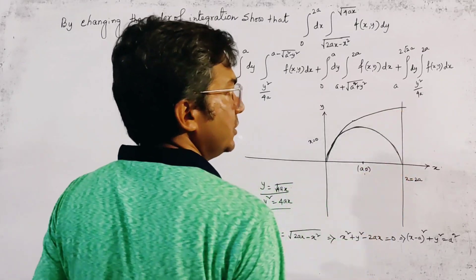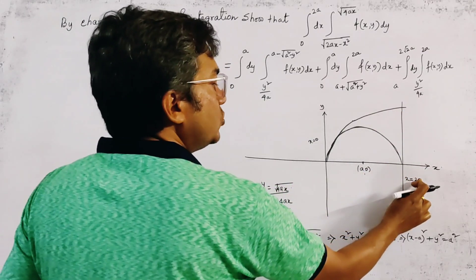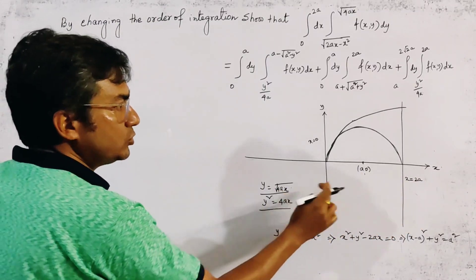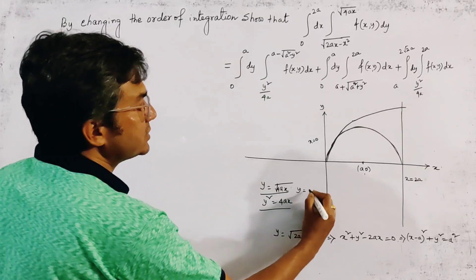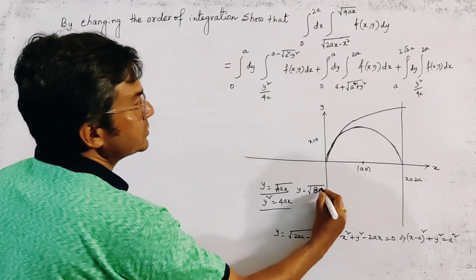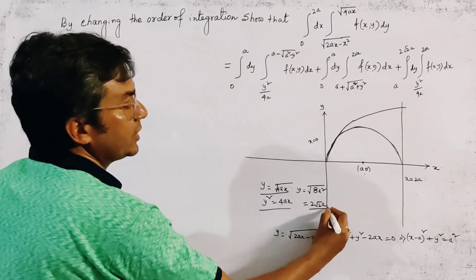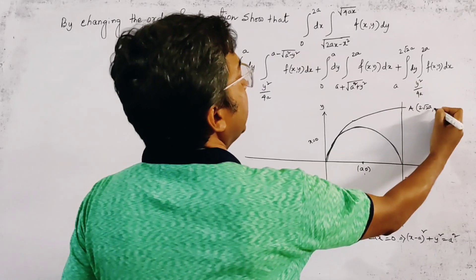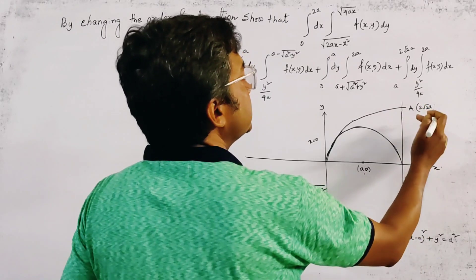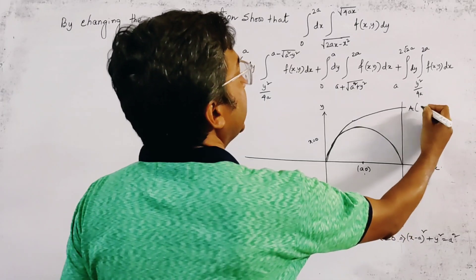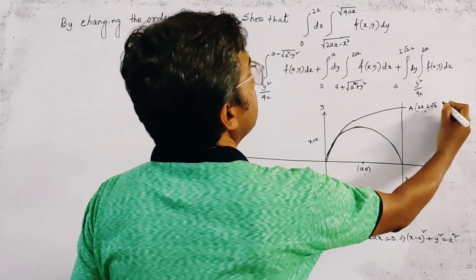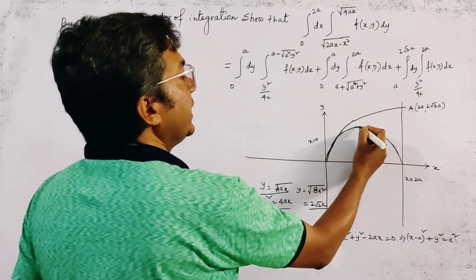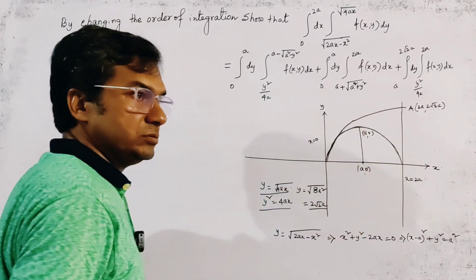To find the intersection of x = 2a with the parabola, we put x = 2a and get y = √(8a²) = 2√(2a). So the intersection point is (2a, 2√(2a)). The center of the circle is at (a, 0).